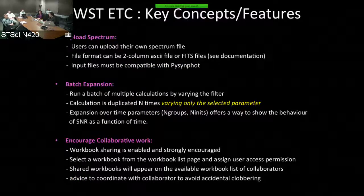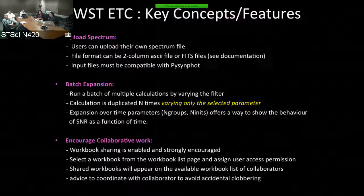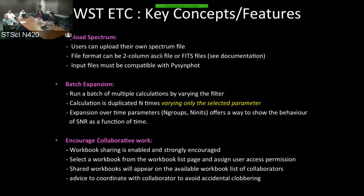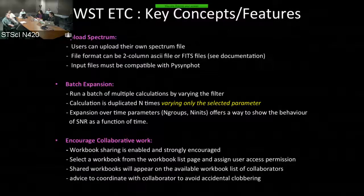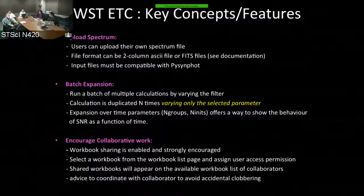You can upload your own spectrum if you don't find your favorite spectrum among the provided templates. The file format is a two-column ASCII file with wavelength as the first column and flux density as the second, or a FITS file with the same structure. Check the documentation for allowed flux units. One important thing: make sure your input files are compatible with PySynphot — if they cannot be used in PySynphot, they will not be compatible with the ETC. How to check that is also described in the documentation.